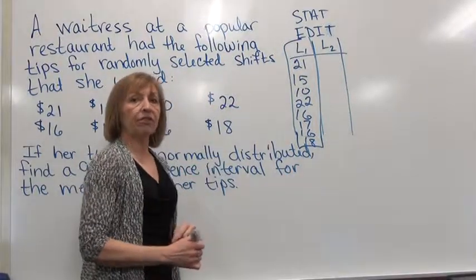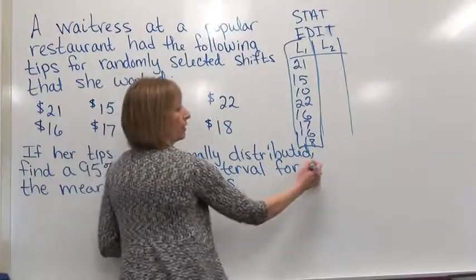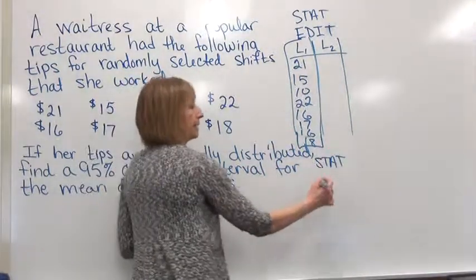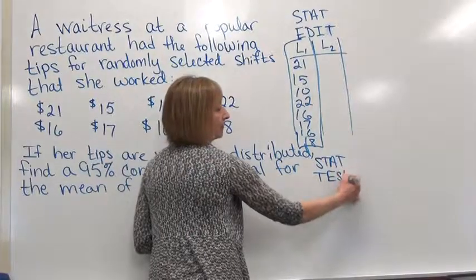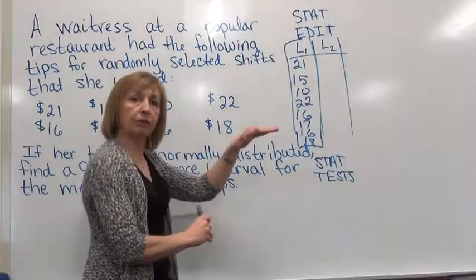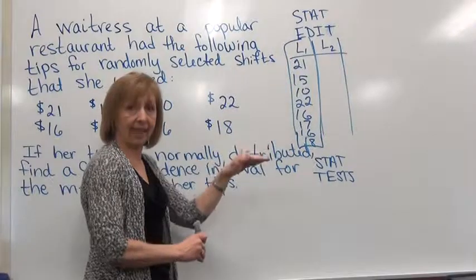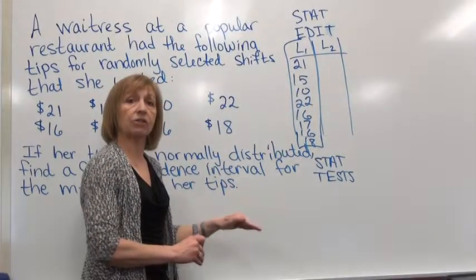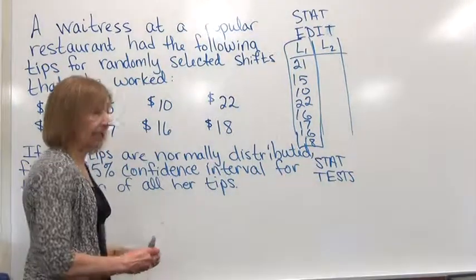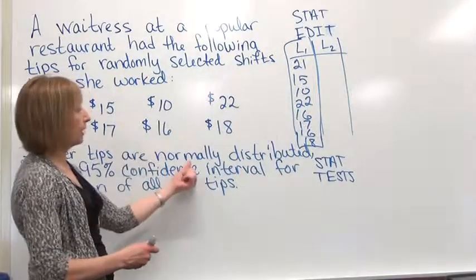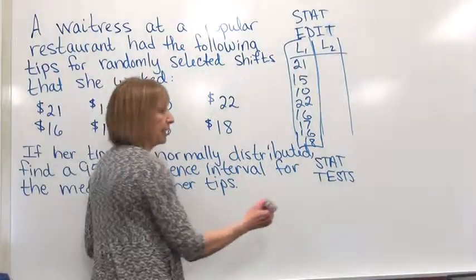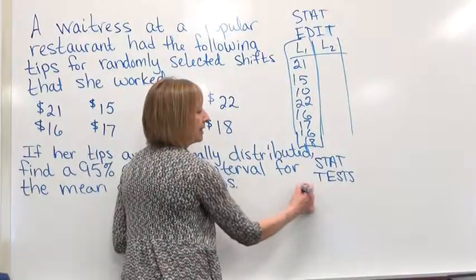Now once we have that entered into our list, we're going to push stat again. And then after we push stat, cursor to the right to get to where it says tests. Now under the test menu, you have information that we'll use when we're doing hypothesis tests. But then below that you'll see things that start to say interval. And when we're doing a confidence interval for the population mean, the interval that we want to do for pulling our sample out of a normally distributed group and not having any of the population parameter information is to look at the T interval.